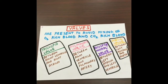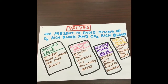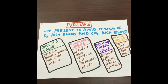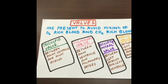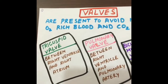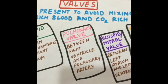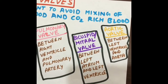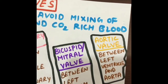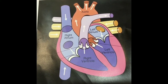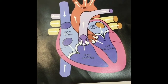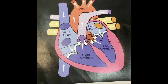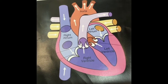There are four valves present in our heart to avoid mixing of oxygen-rich blood and carbon dioxide-rich blood. The tricuspid valve is between the right ventricle and right atrium. The pulmonary valve is between the right ventricle and pulmonary artery. The bicuspid or mitral valve is between the left atrium and left ventricle. The aortic valve is between the left ventricle and aorta. Here is a diagram to help you learn better — it shows all chambers of the heart, the aorta, the four valves, the vena cava, and the pulmonary vein and pulmonary artery.